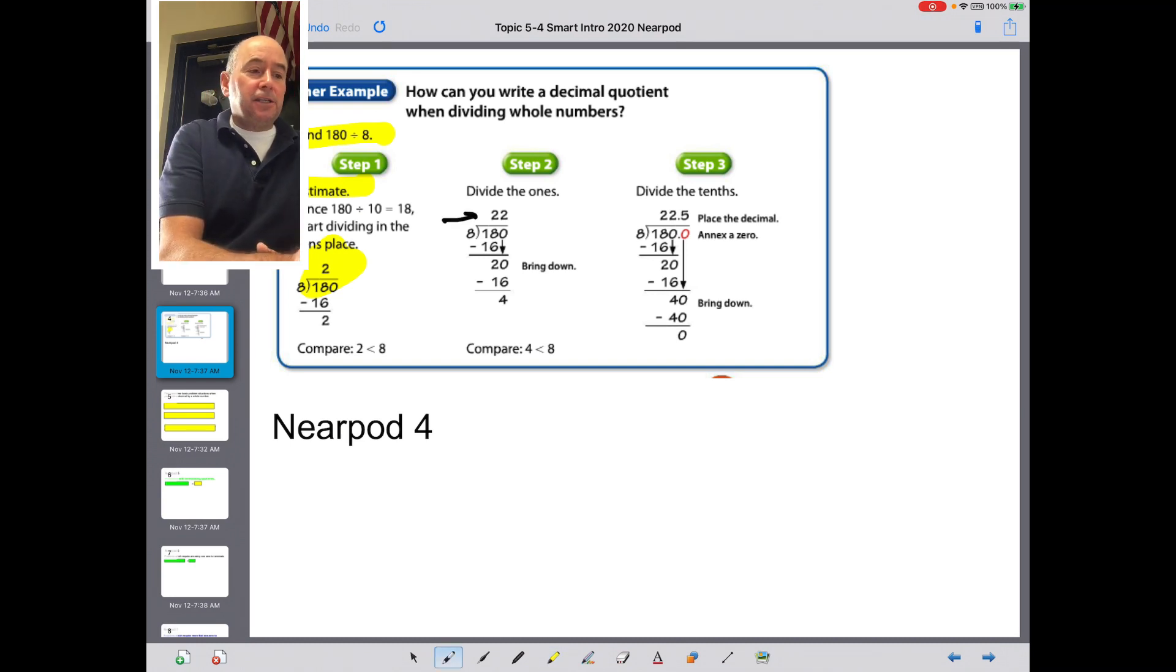And then they go into step three. And step three is important because they are annexing a zero. So in other words, what's happening there, kids, is you get down here and we're not going to use remainders anymore, but you've run out of digits in the dividends. So we have to annex zero so we can divide until we get a terminated decimal. Do you want to pause for the Nearpod?